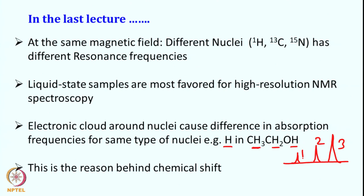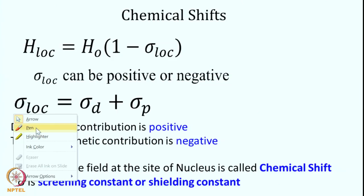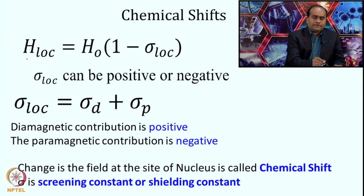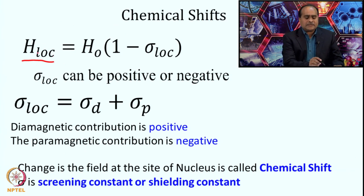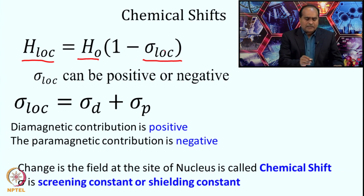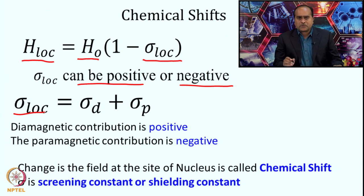This differential electronic cloud around the nuclei is the reason behind chemical shift. Because of this differential electronic cloud, a particular nucleus experiences a different effective magnetic field. H_local — the magnetic field experienced by a particular nucleus — differs from H0, the main magnetic field, and that depends upon the screening constant or shielding constant sigma_local around that nucleus. This sigma_local depends on two contributions: one from the diamagnetic contribution and another from the paramagnetic contribution.